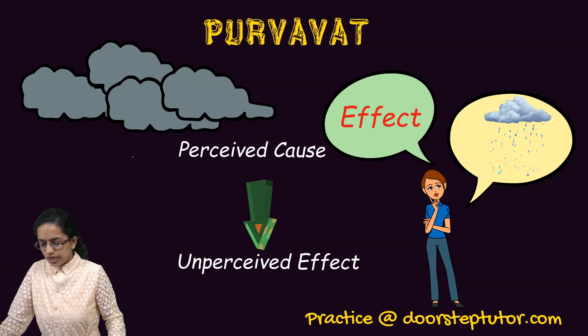Sesavat is always an effect that is known while the previous cause is unknown. Another example: a student fails in the examination — that is a known effect. The cause might be that the student has not studied, or does not want to study, or there could be many reasons. But the cause is not perceived, and therefore it is Sesavat.